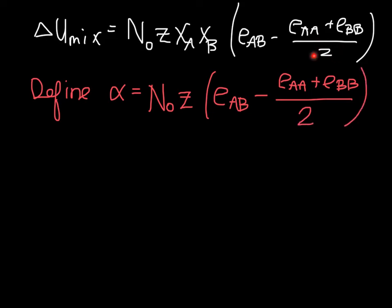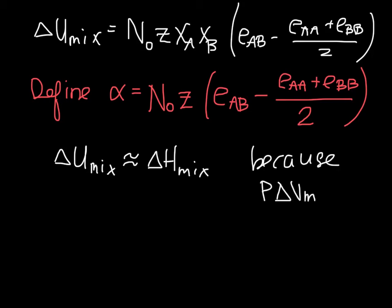This is a 2 down here, not a Z. For condensed phases, it is the case that delta U is approximately equal to delta H, because the term that separates those, which is P delta V of mixing, is close to zero. So we can make this approximation.